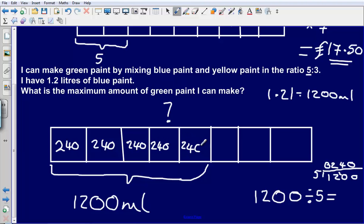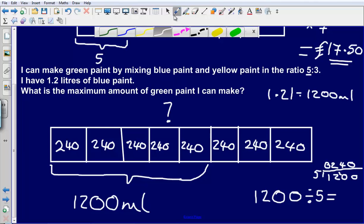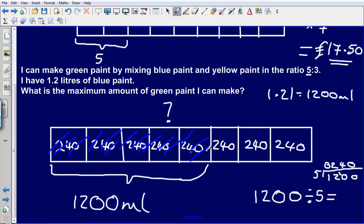So they're worth 240 millilitres each. We want to know the maximum amount of green paint that we can make. Well this bit here is our blue paint, and this bit here is our yellow paint.